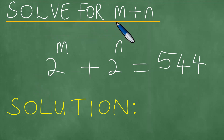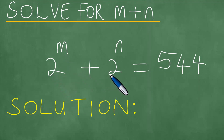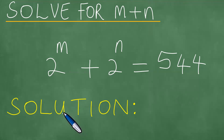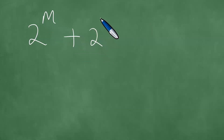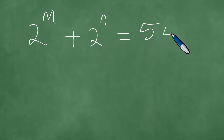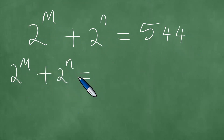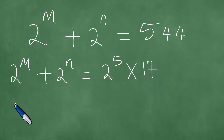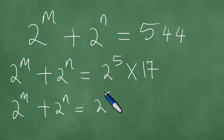We need to solve for m plus n. We are given that 2 to the power m plus 2 to the power n equals 544. We present a step-by-step solution. We have 2^m + 2^n = 544, and 544 equals 2 to the power 5 times 17.